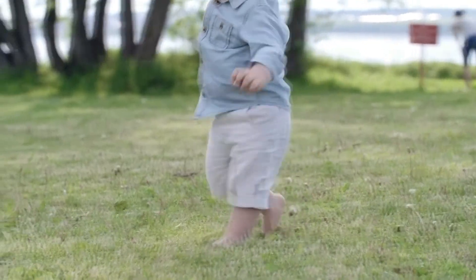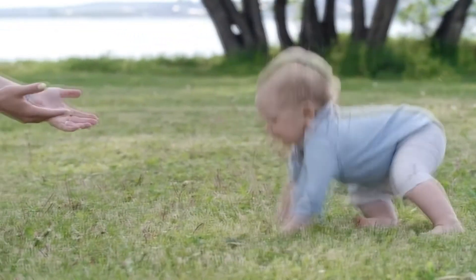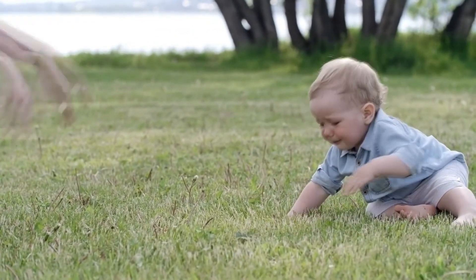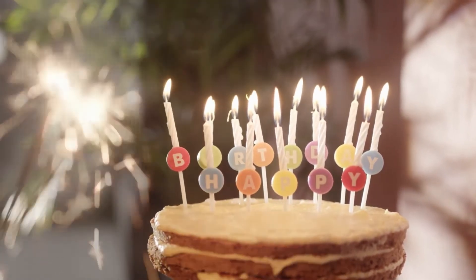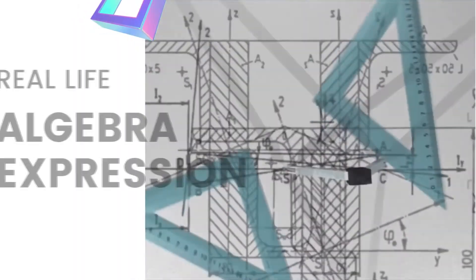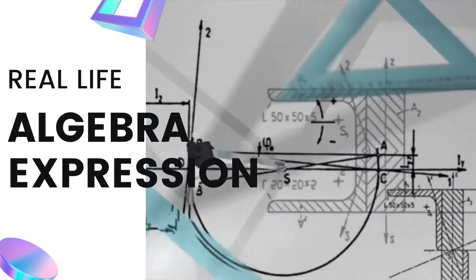Another very common example of variable is age. Age never ceases to change. Actually, it changes with every passing moment. Alright, let's move to an example and write it in a mathematical form.